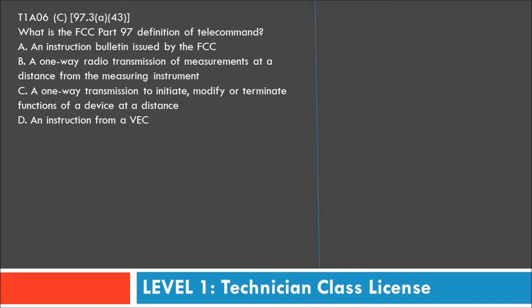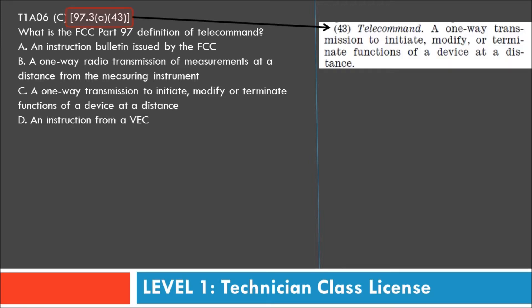Your choices are: A — an instruction bulletin issued by the FCC; B — a one-way radio transmission of measurement at a distance from the measuring instrument; C — a one-way transmission to initiate, modify, or terminate functions of a device at a distance; or D — an instruction from a VEC.